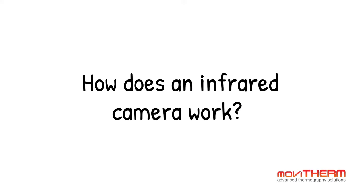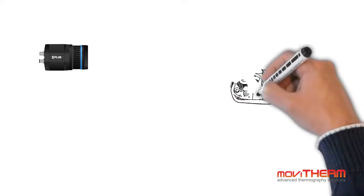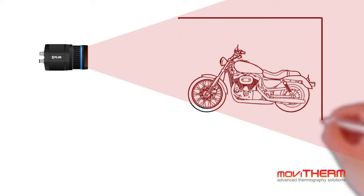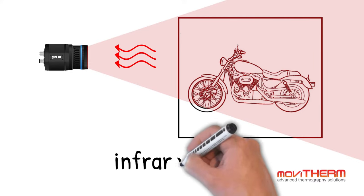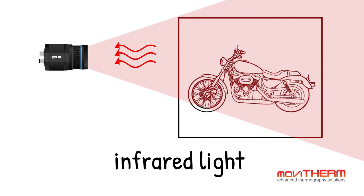How does an infrared camera work? Infrared cameras have within them a detector that sees infrared light, more commonly called infrared radiation.